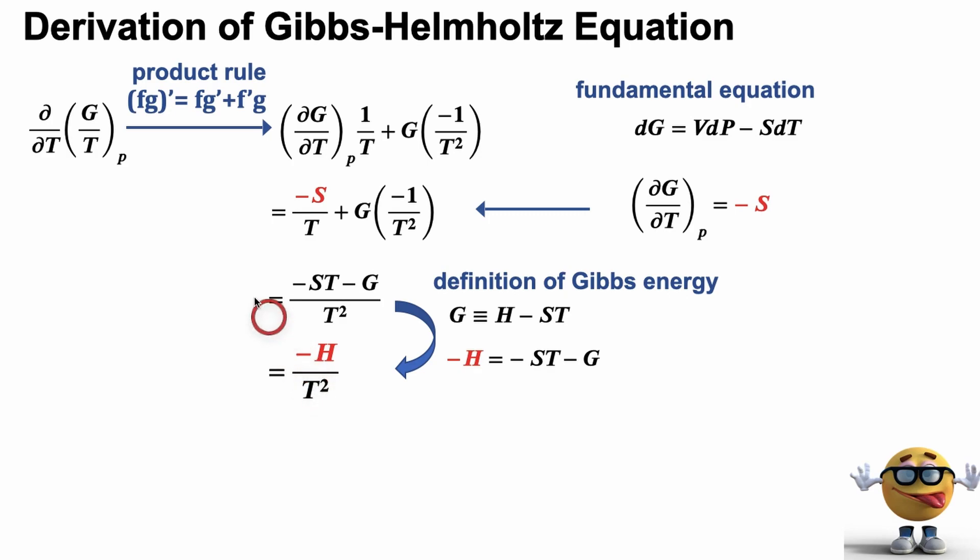So in hindsight, the reason we took the derivative of G over T is because it simplifies into this kind of this nice way. Anyways, it works out. I do have other derivations, but that's kind of the most popular way.